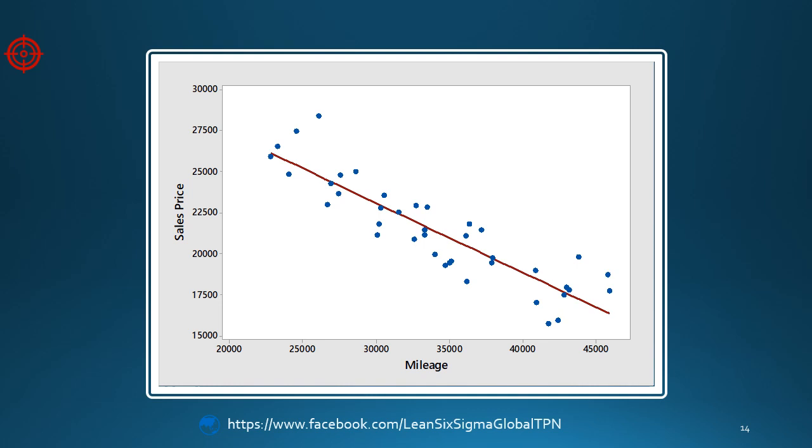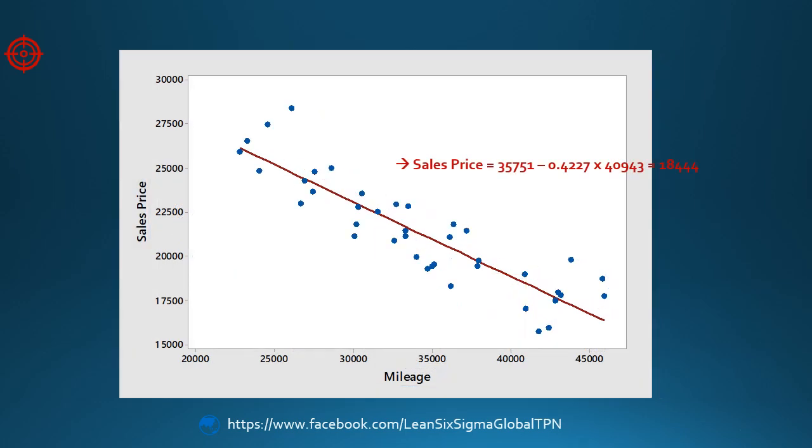What if we plug the same value for mileage, 40,943, into the regression line? The value the equation returns is called the fitted value. What fitted value should we expect? We can see that for this observation, the regression equation predicted a sales price of $18,400.